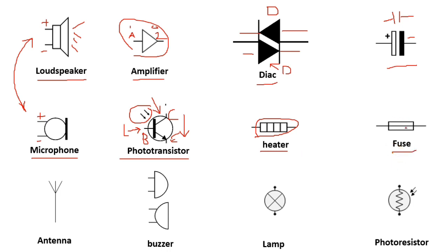This is the symbol of a heater device. This is the symbol of a fuse — always labeled with the letter F. When measuring the fuse with a multimeter or ohmmeter, the resistance is always equal to or near zero ohms.